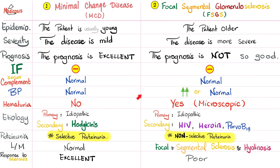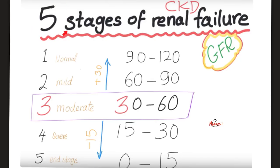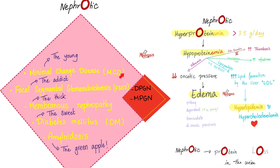Here is a comparison table between minimal change disease and focal segmental glomerulosclerosis. These are the five stages of chronic kidney disease; end-stage renal disease is the final stage, when the glomerular filtration rate drops below 15 mL per minute.